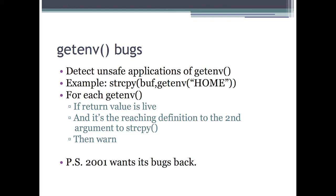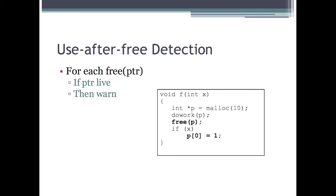For use-after-free detection: for each free of a pointer, if the pointer is live afterward, we warn. For double-free detection: for each free of a pointer, if the upward-exposed use of that pointer's definition is another free, meaning the next use of that pointer is another free call, then we warn. These are simple but effective ways to use data flow analysis for bug detection.